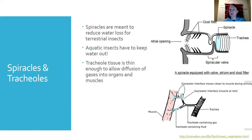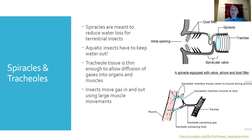The tracheal tissue at the very tiny branches getting close to muscle tissue is very thin — thin enough to allow diffusion of gases into organs and muscles. The tracheoles don't penetrate through the muscle tissue, but they're so close that diffusion occurs very easily. Insects can also pump air through their tracheal system using large muscle movement. Flying requires a lot of oxygen, and the process of flying actually pumps oxygen through their bodies. Odonates bring oxygen into spiracles in their rear end and can push it out very fast, which is one of the ways they achieve jet propulsion.